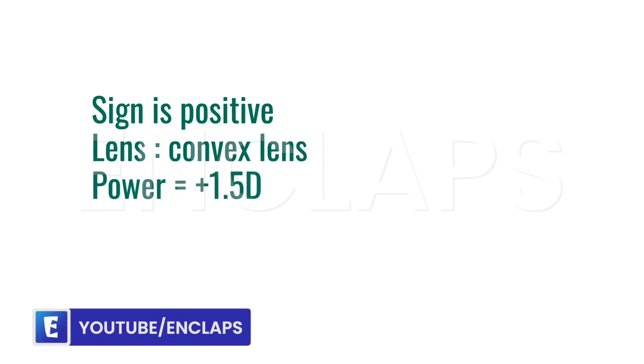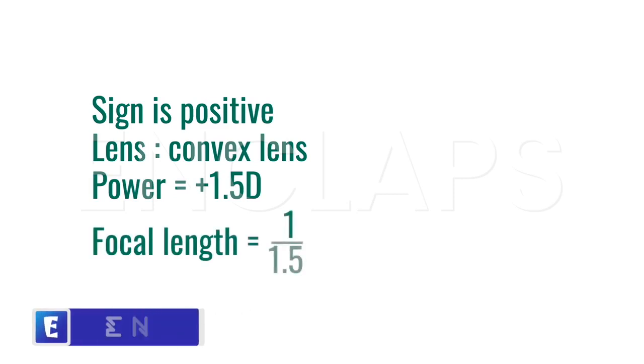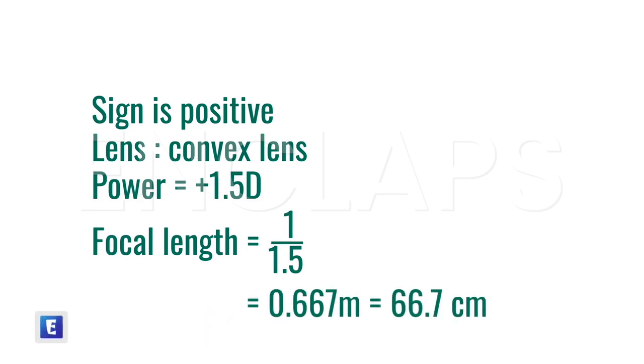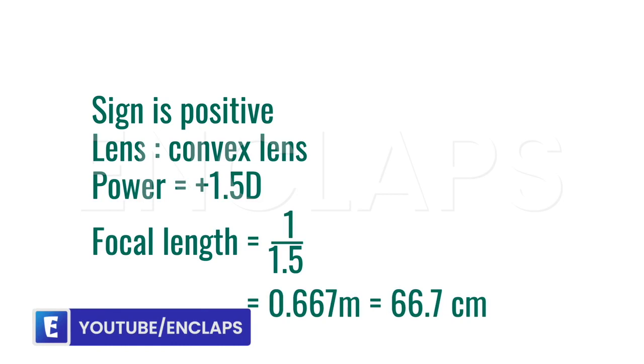Power is given as positive 1.5 diopters. So, the focal length will be the reciprocal of 1.5 that is 1 divided by 1.5 which is equal to 0.667 meters or 66.7 centimeters.